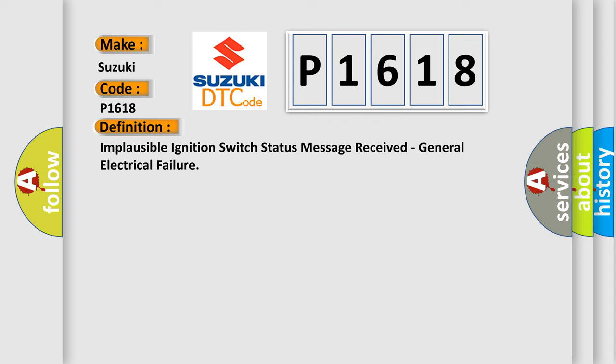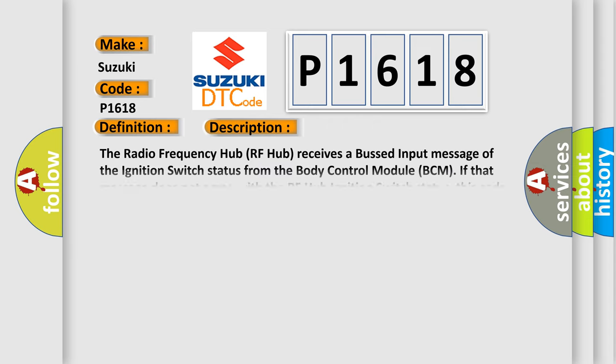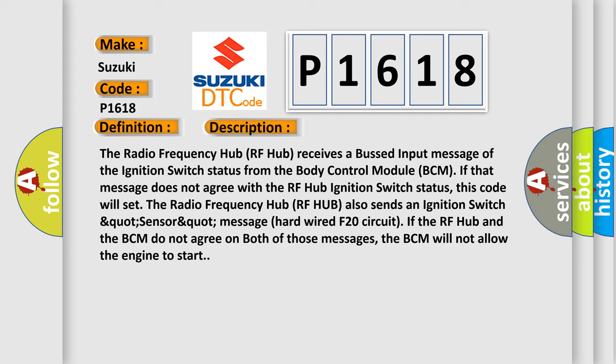The radio frequency hub (RF hub) receives an input message of the ignition switch status from the body control module (BCM). If that message does not agree with the RF hub ignition switch status, this code will set. The RF hub also sends an ignition switch QUART sensor message via the hardwired F20 circuit. If the RF hub and the BCM do not agree on both of those messages, the BCM will not allow the engine to start.